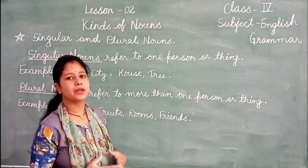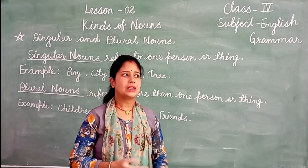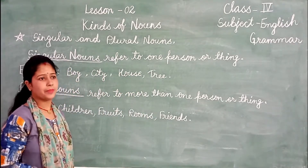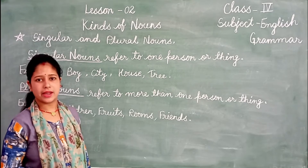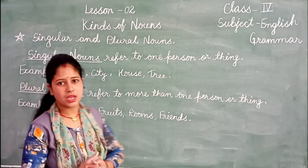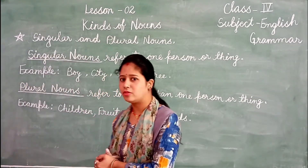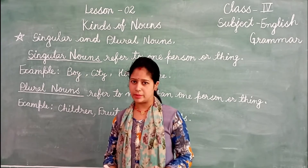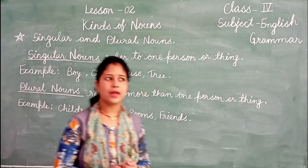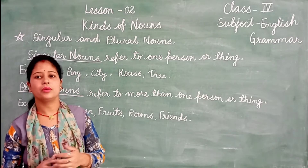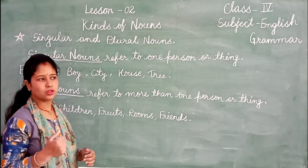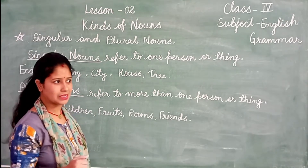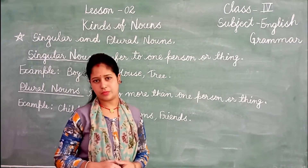Noun has six types. First is Singular and Plural Noun. Second type is Masculine and Feminine Noun. Third type is Countable and Uncountable Noun. Fourth is Proper and Common Noun. Fifth is Collective Noun. And the sixth is Abstract Noun.